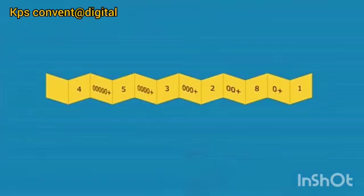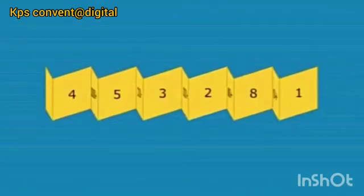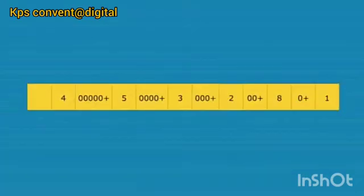Now write zeros and plus signs on the hidden sides of the strip, which represent the place values. Then fold the strip as shown in the image to read the numbers written on the strip. Now expand the strip.